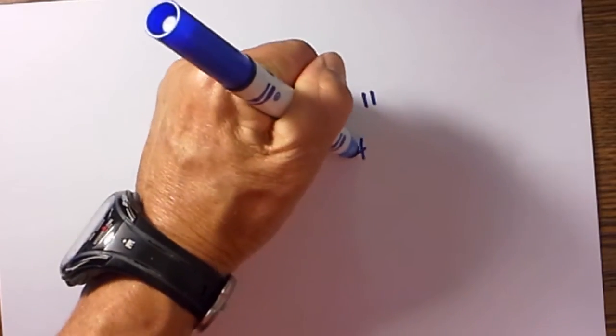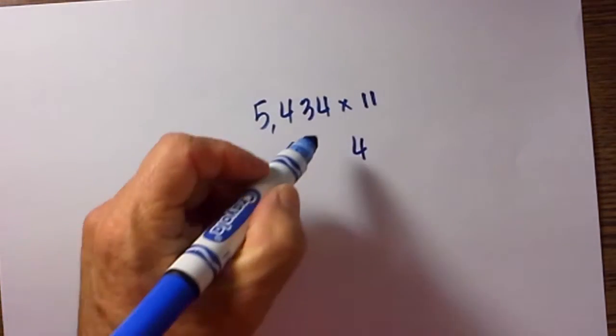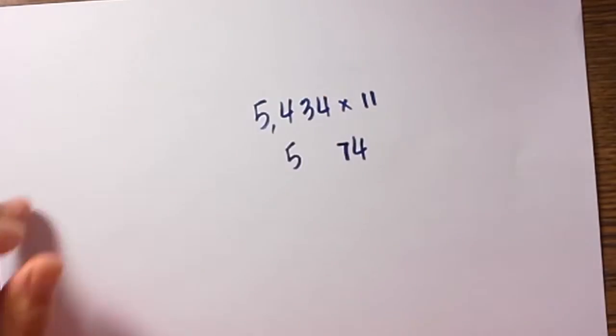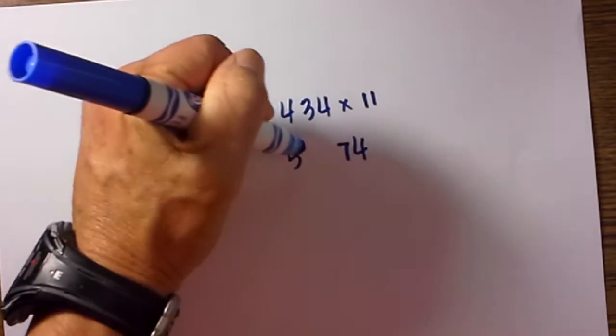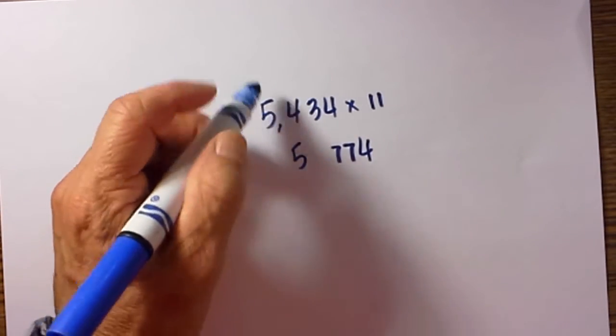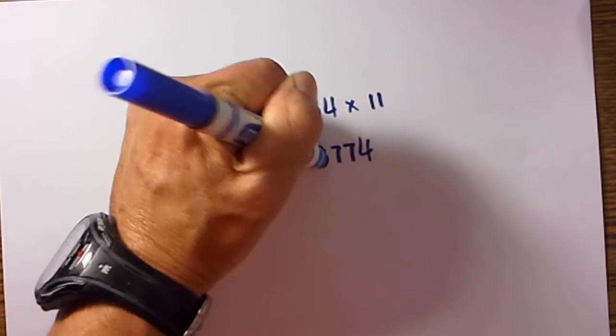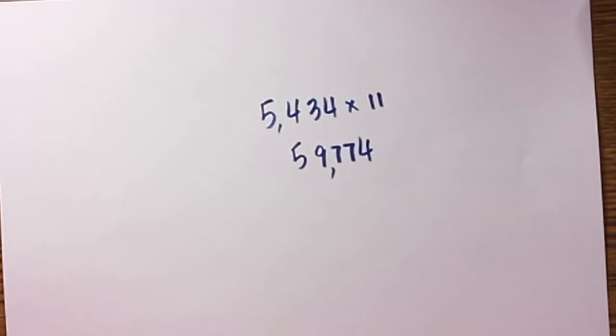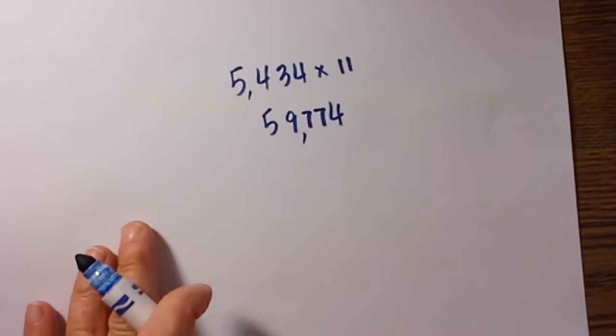The last digit is going to be the 4. Then what we do is: 4 plus 3 is 7, 3 plus 4 is also 7, and 4 plus 5 is 9. So the answer is 59,774.